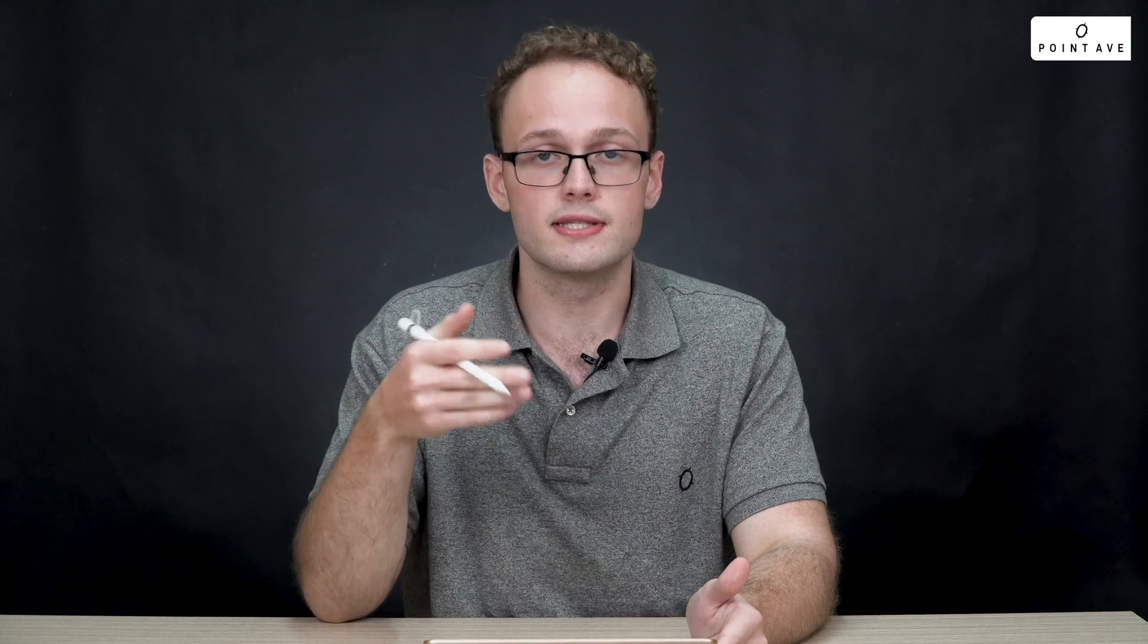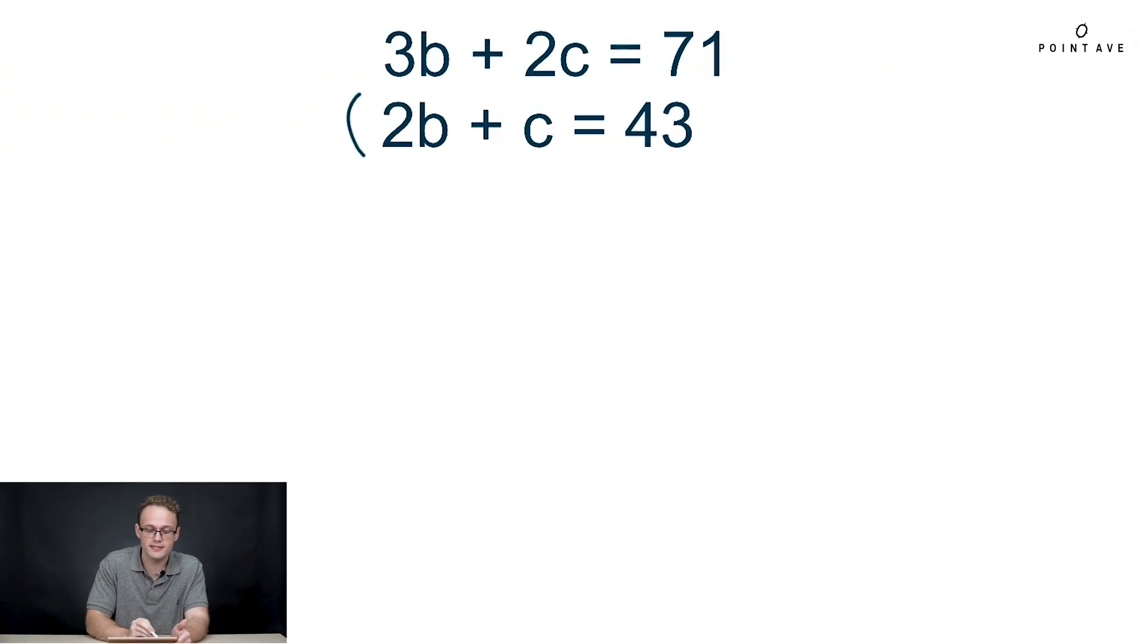So we haven't done anything special yet. We've just arranged it to make it easy to solve. Now that we have it aligned, we need to match variables so that we can eliminate them. Here it's going to be very easy to match the C's, and to do that we see we can just multiply the second equation by negative 2.